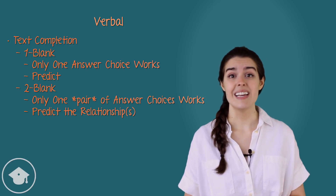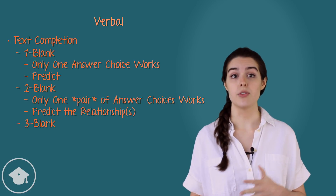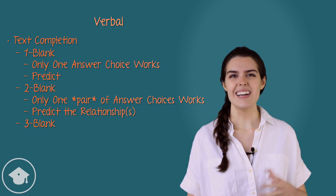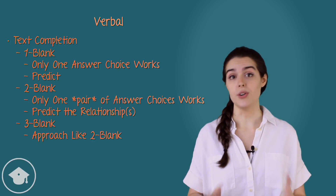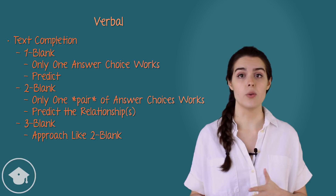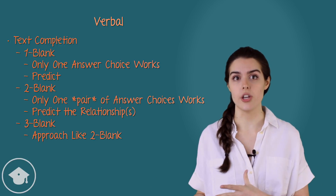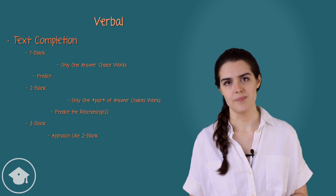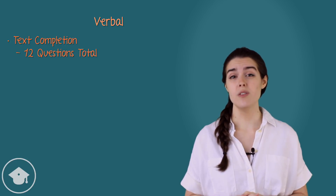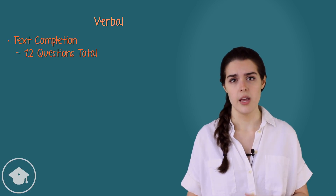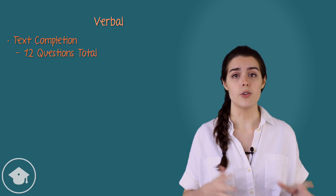The third and final flavor is the three-blank text completion question. These have three blanks, each with three answer choices — basically the two-blank question plus a bonus round. We approach them in pretty much the same way: be flexible with your predictions, but consider the blanks together as much as possible. Sometimes one blank stands alone while the other two rely on each other; sometimes all three rely on each other. Very rarely can we approach each blank individually and still get the question right.